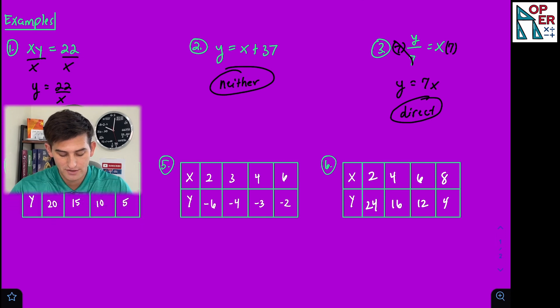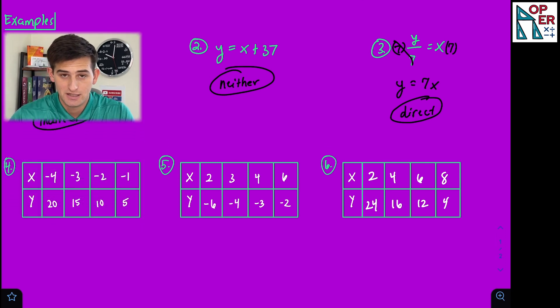Now for our three tables here at the bottom, let's remember what we talked about at the beginning. If our variation is direct, then our ratio y divided by x should be constant. If our table of values is indirect, then our product x times y should be constant.